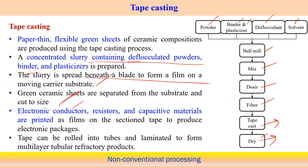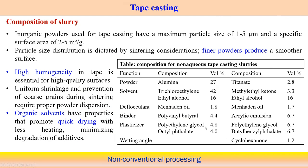Applications include electronic conductors, resistors, and capacitor materials printed in film form for electronic packaging systems. The tape can also be rolled to form a tube, or several layers can be laminated to produce a multi-layer structure.